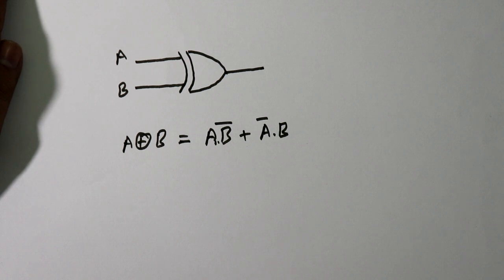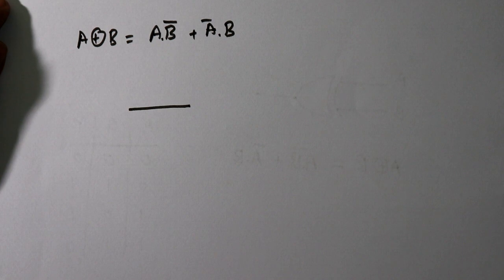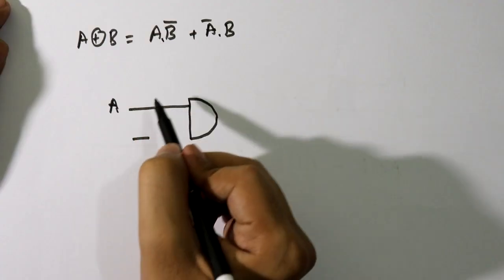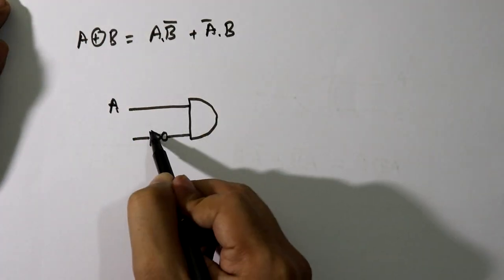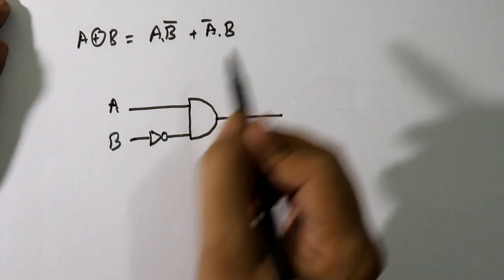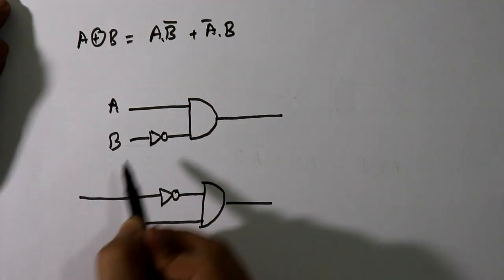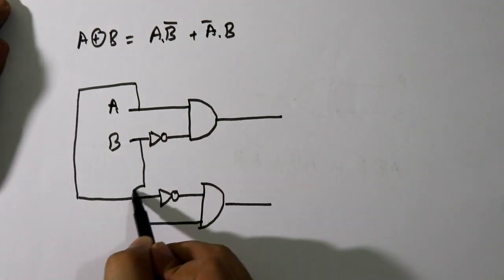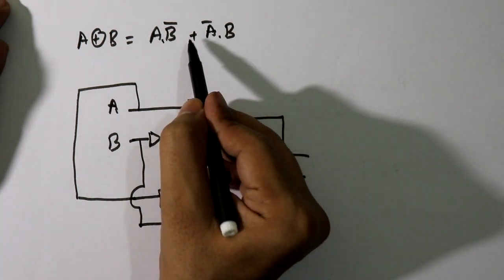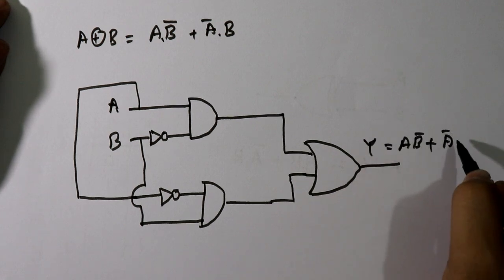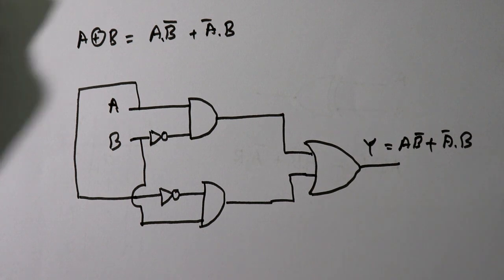We can build an XOR gate combining the basic gates — NOT gate, AND gate, and OR gate. If we want to design XOR using only basic gates, it will be: A dot complement of B, using one NOT gate for the complement of B, and complement of A dot B, using another NOT gate. These two AND outputs are connected to an OR gate for addition, giving us the final equation: A·B' + A'·B.